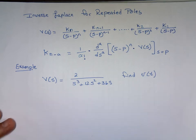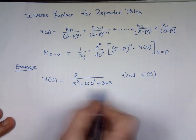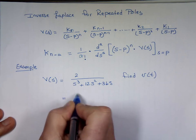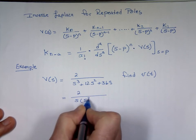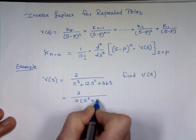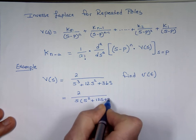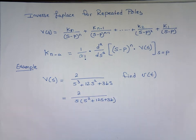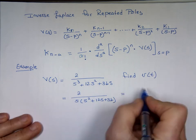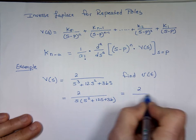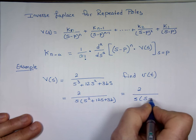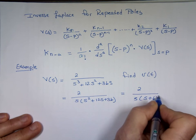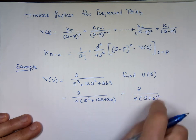So let's take this example. You can factor an s out of the denominator, so you get s times (s squared plus 12s plus 36). And if we factor that one more time, that's 2 over s times (s plus 6) squared. So you can see we have a repeated root at s plus 6.